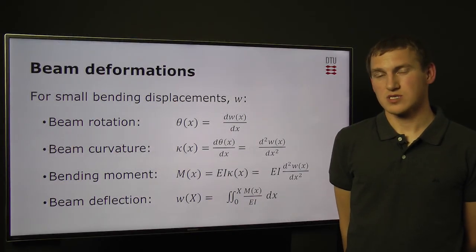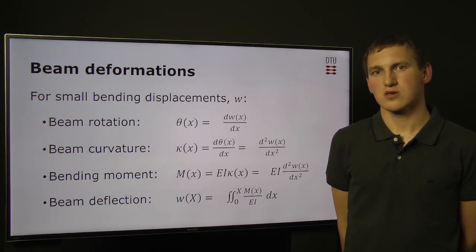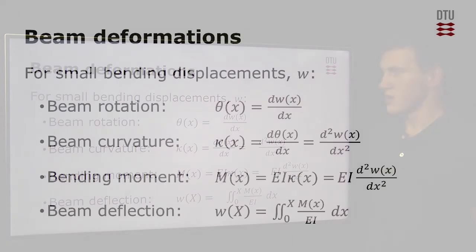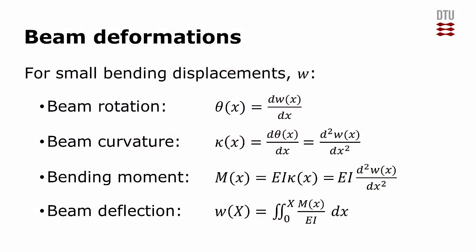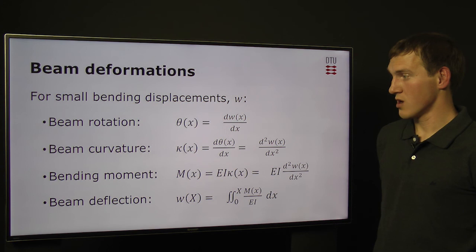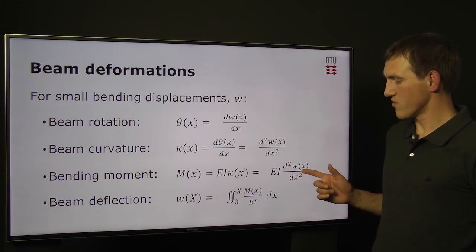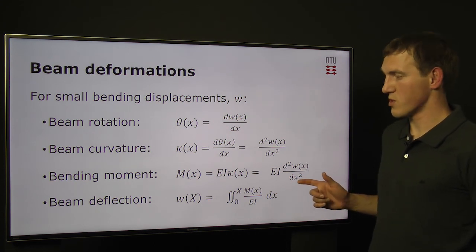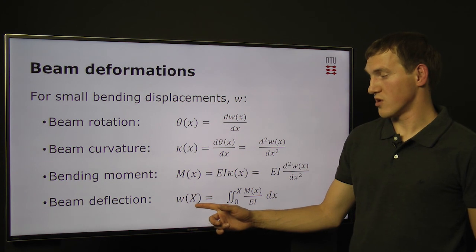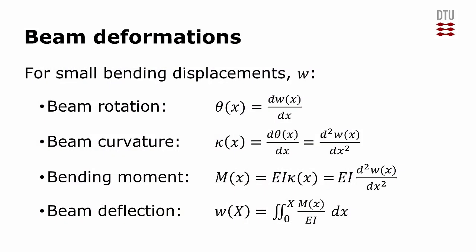Often, but not always, beam deformations are much smaller compared to the beam length, width, and height. In this case, we can use a number of simplifications: beam bending rotation theta is the first derivative of beam displacement, while beam curvature kappa is the second derivative. So the bending moment M is related to beam deformation through the second derivative of displacement. Beam deflection as a function of position X can be calculated by double integration of the beam curvature, taking into account boundary conditions.